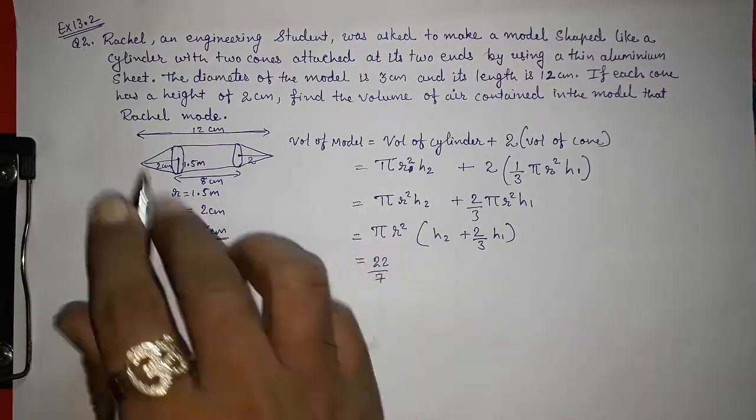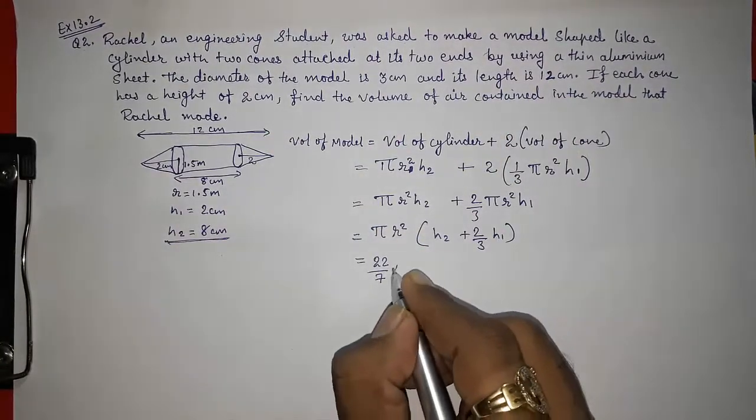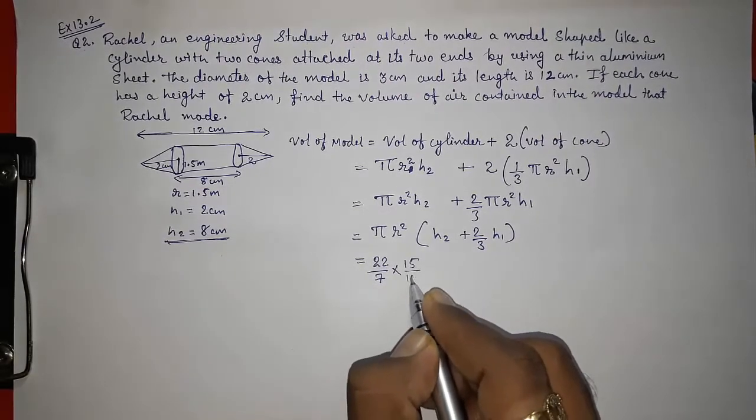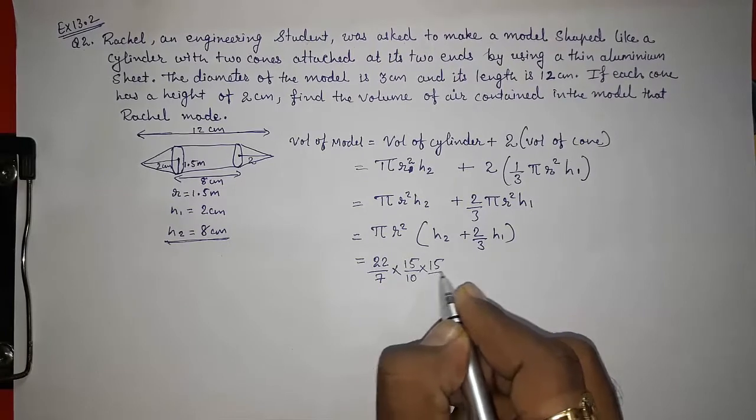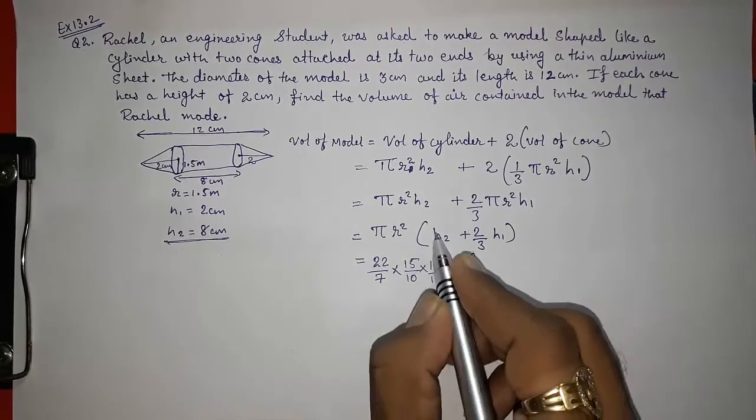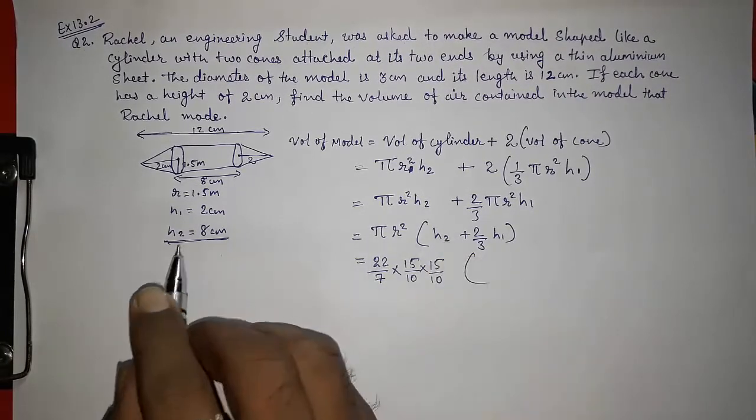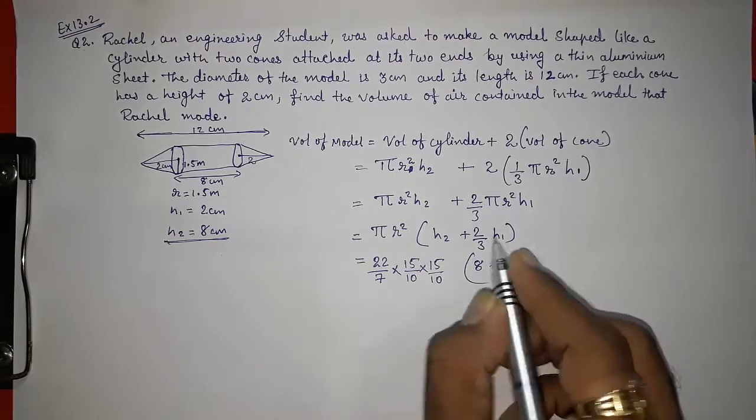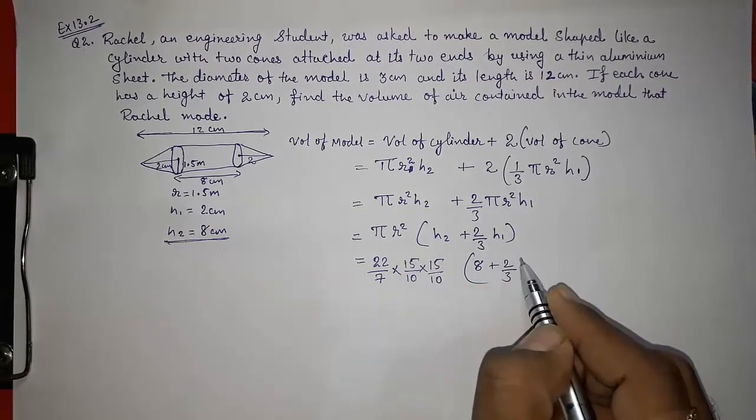π is 22/7, because no value of π is given. The radius is 1.5, so I am going to write 15/10 into 15/10. Now h2, what is h2? 8. So 8 plus 2/3 into what is h1? h1 is 2.